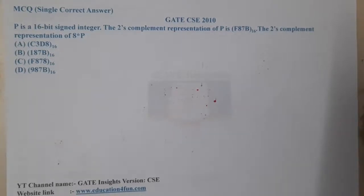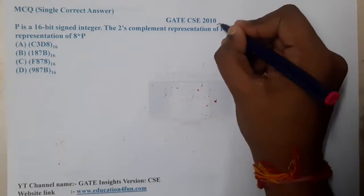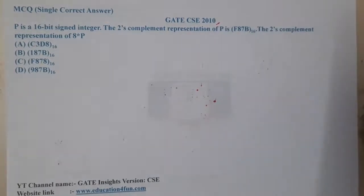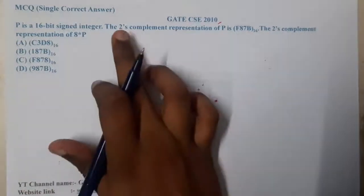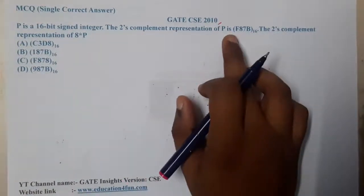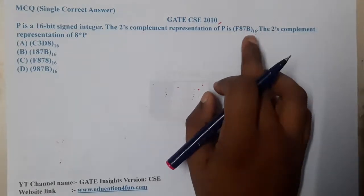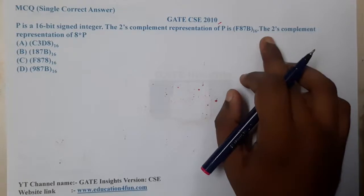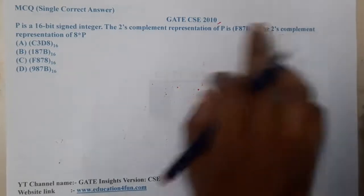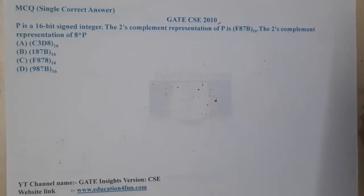Hello guys, we are back with our next lecture. This question belongs to GATE CSE 2010. The question is: P is a 16-bit integer. The two's complement representation of P is F87B base 16. The question asks for the two's complement representation of 8 into P.